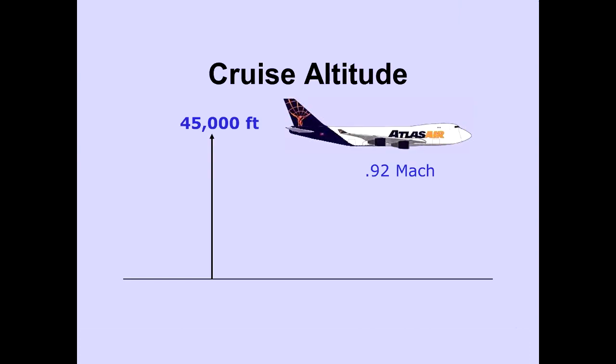The 747-400 cruises at altitudes of up to 45,000 feet. Maximum speed is 0.92 Mach.